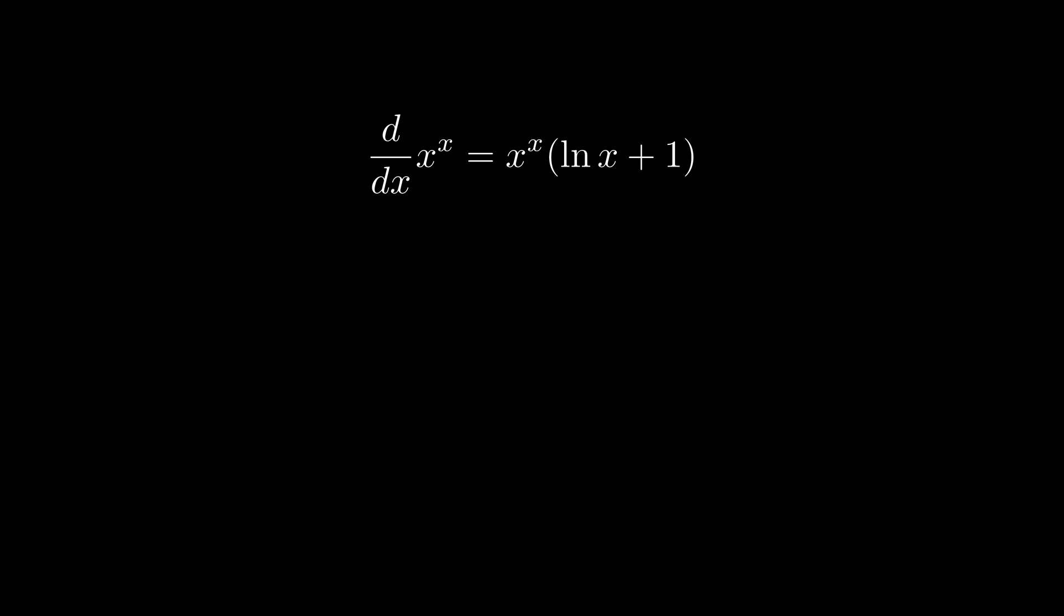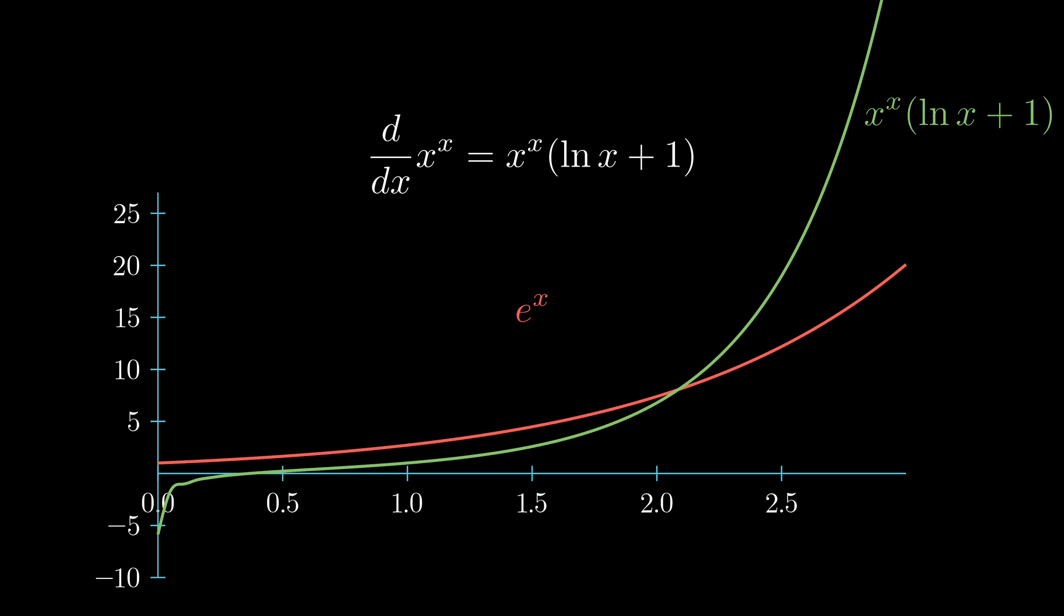The derivative is actually negative infinity at 0. However, x to the power of x grows faster than normal exponential function for large x.